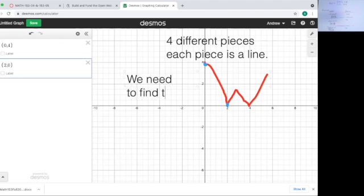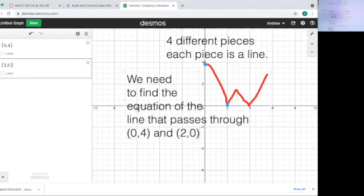So we need to find the equation of the line that passes through (0,4) and (2,0). I don't know what it is, but okay, so you claim it is y equals negative 2x plus 4. Awesome.